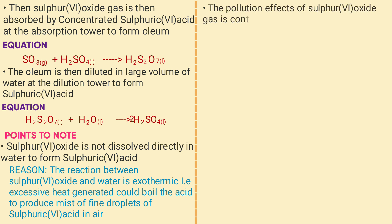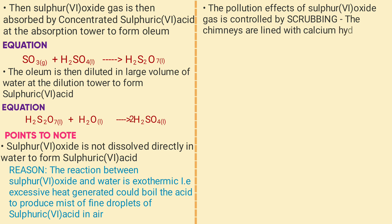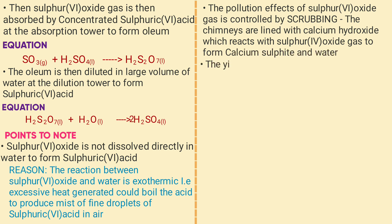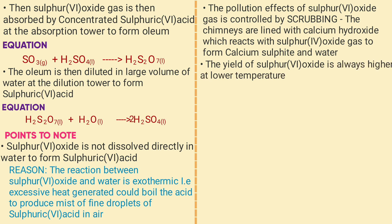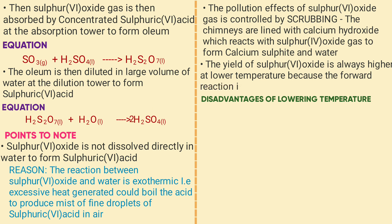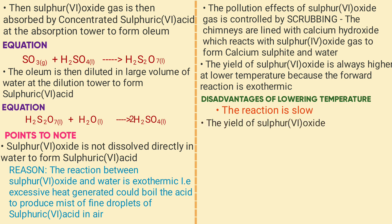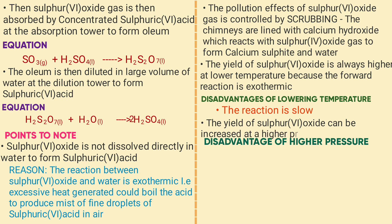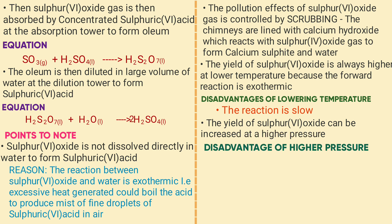The chimneys are lined with calcium hydroxide, which reacts with sulfur oxide to form calcium sulfate and water. The yield of SO₃ is always higher at low temperatures. However, the disadvantage of operating at low temperature is that the reaction rate is slow. The yield of SO₃ can also be increased at high pressure, but the disadvantage is that the cost of maintaining high pressure is expensive.